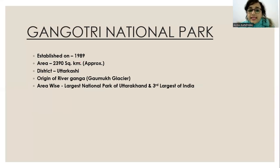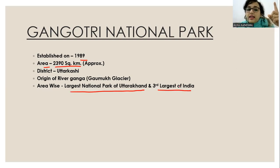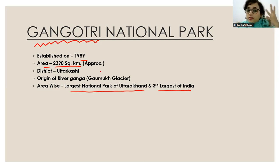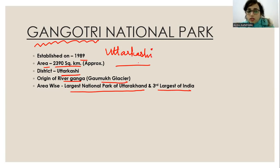Gangotri National Park was established in 1989. The area is 2390 square kilometers — you can see the difference. It is the largest national park of Uttarakhand and the third largest national park of India. It is associated with the origin of river Ganga via the Gomukh glacier. The district is Uttarkashi.